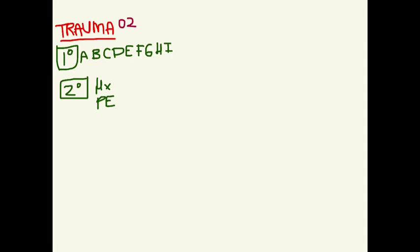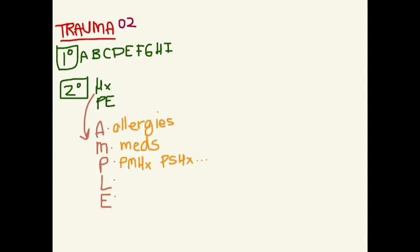First let's look at the history, the AMPLE history. This tries to get all the pertinent information you need in a very short way. A stands for allergies, M is medications, P is past medical history, past surgical history, and L is the last meal because you want to know the last time they ate something.